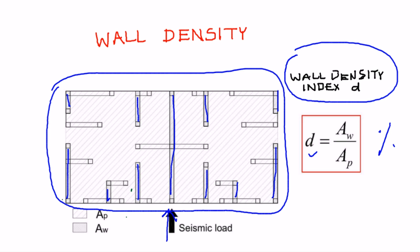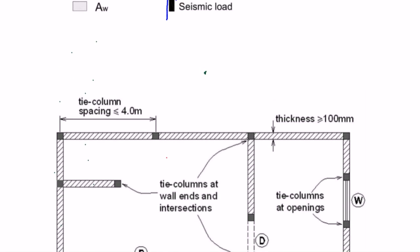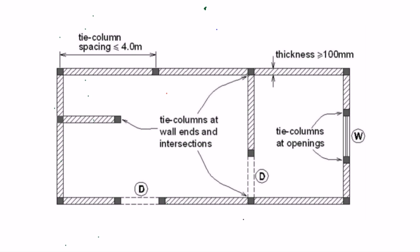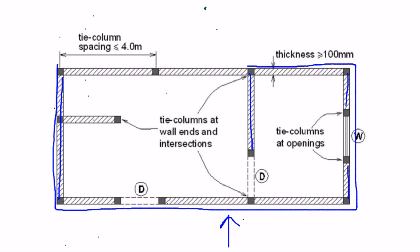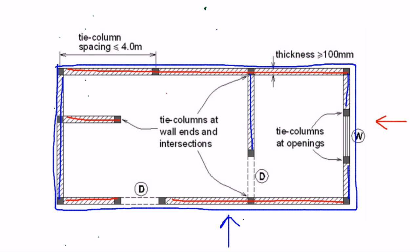Wall density needs to be determined for both directions of seismic loading. On an example of an actual building, for seismic loading acting in one direction, we would consider the total area of the blue shaded walls and divide them by the total floor area of the building. For the other direction, we would determine the area of walls in that direction and divide them by the same total plan area. In that way we obtain the wall density value, and you can see that only confined walls have been taken into account.